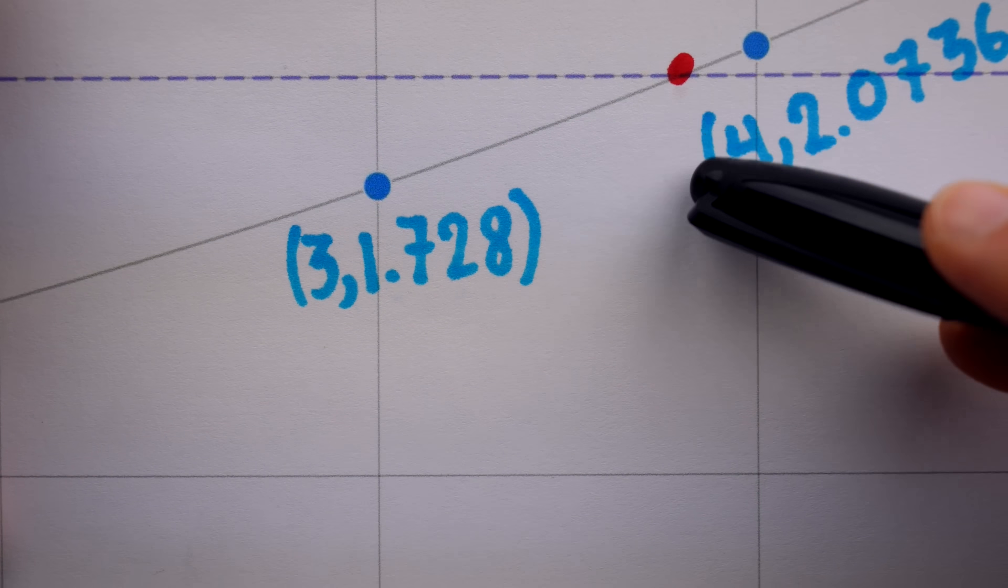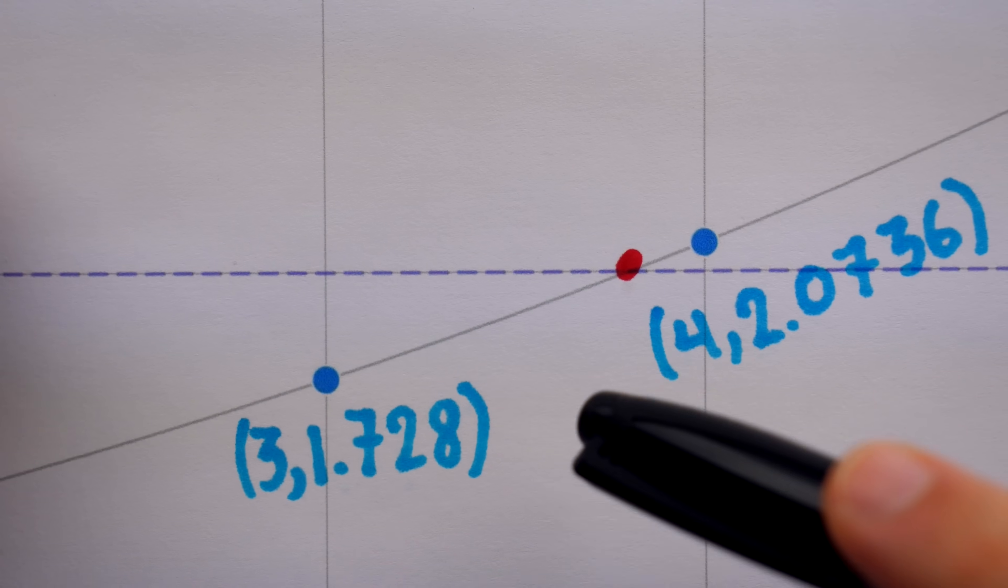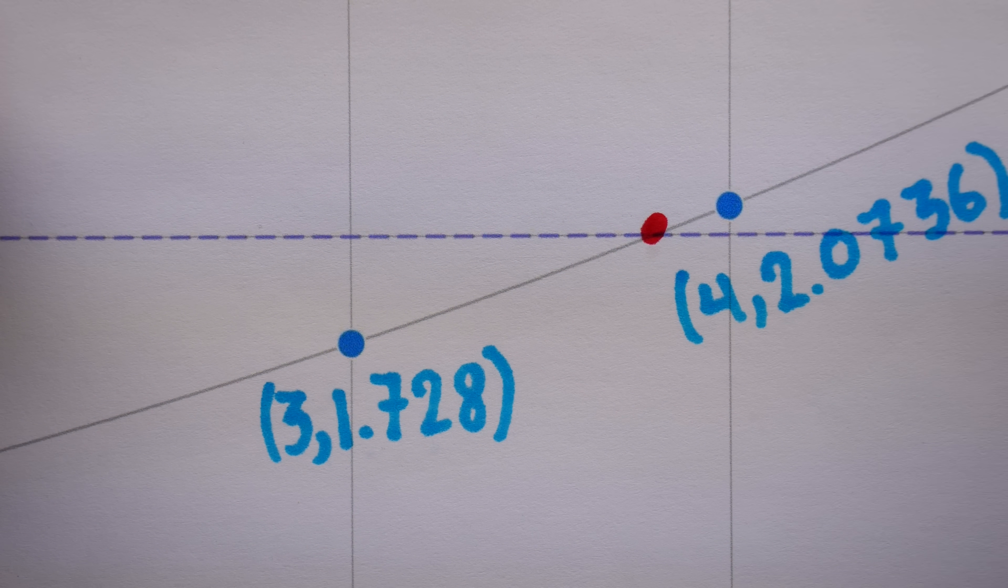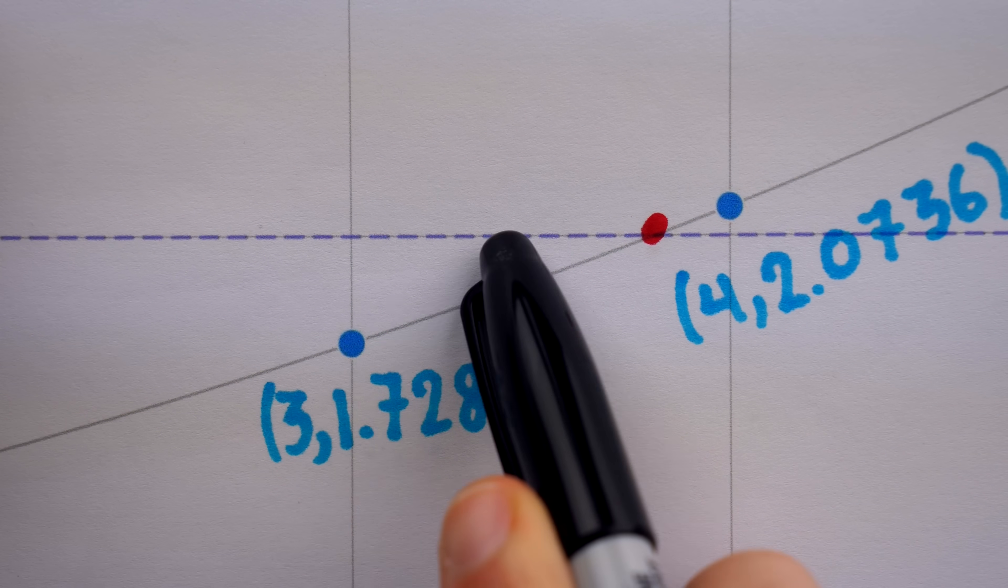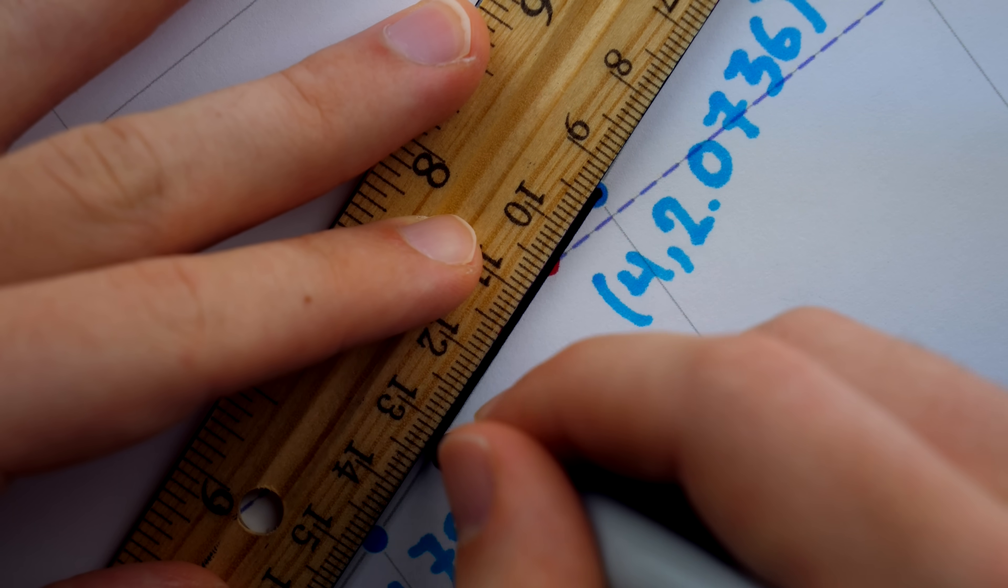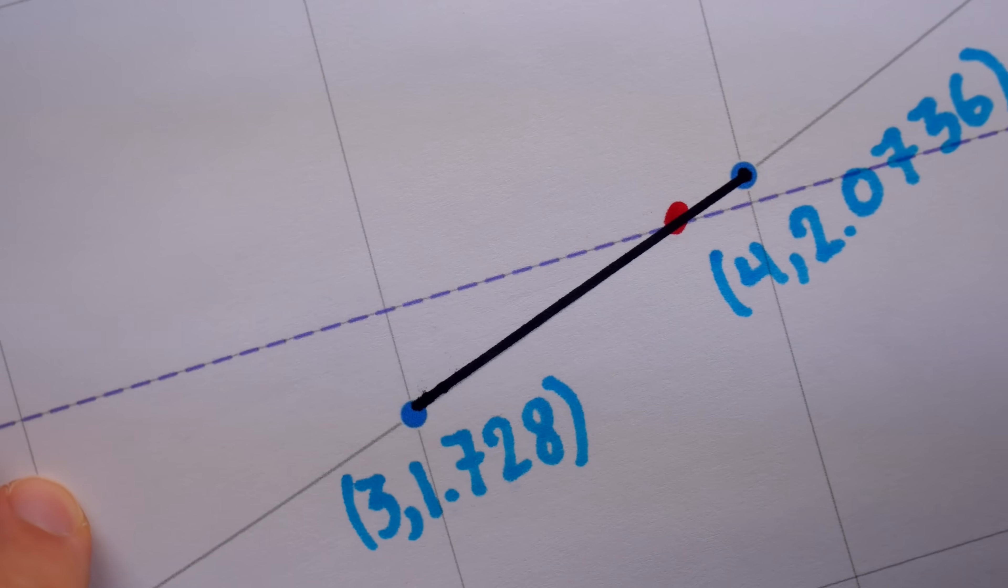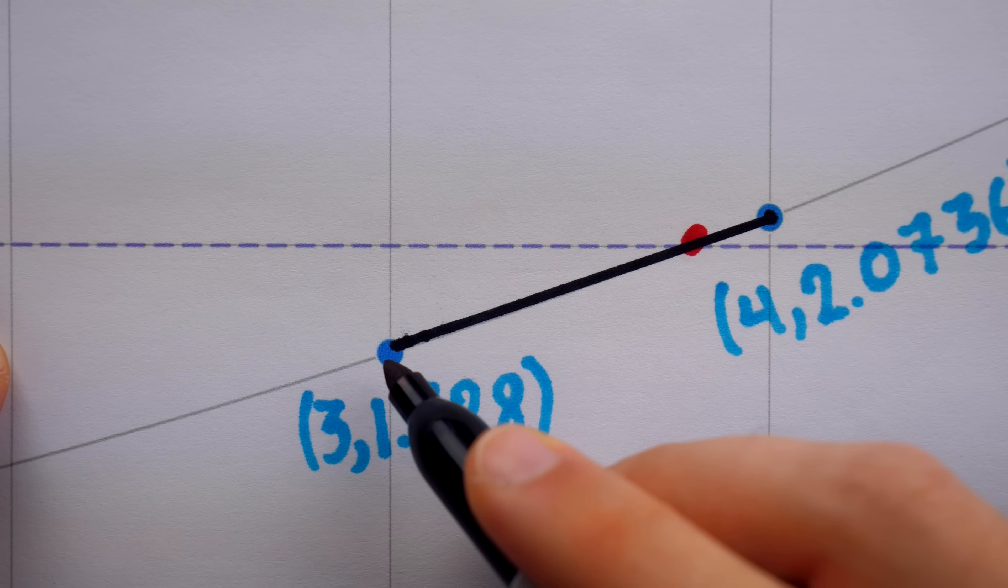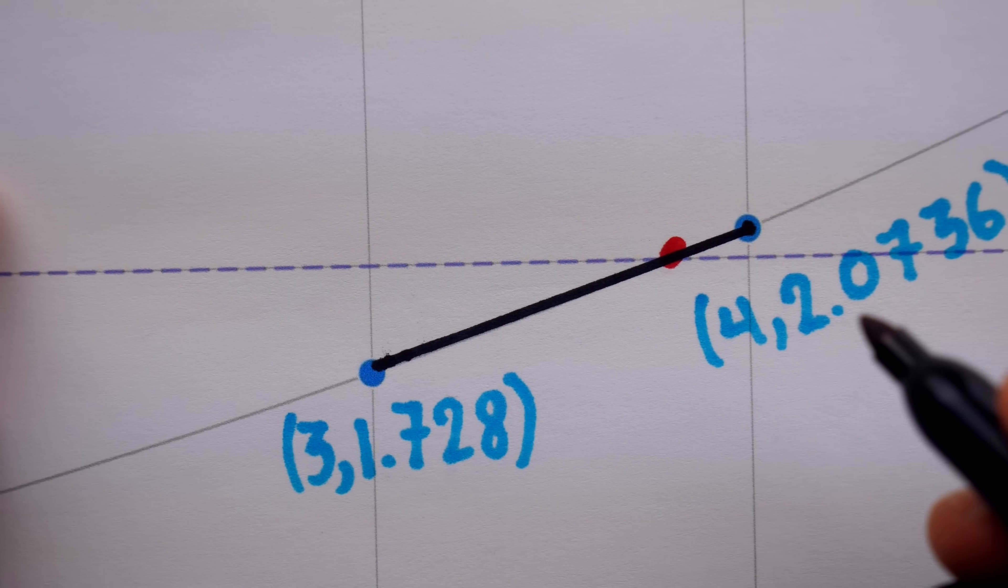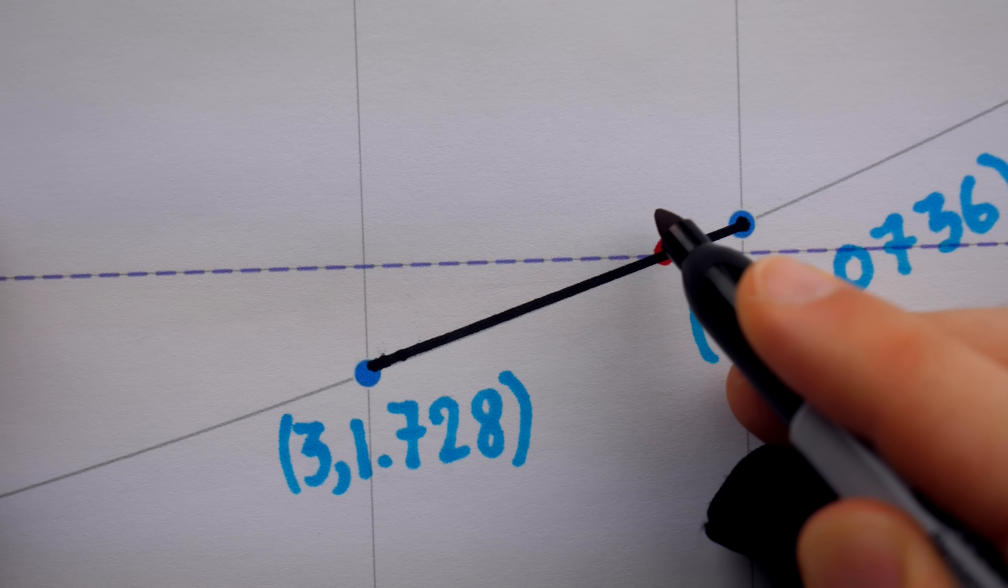So they're looking for the x-coordinate that produces this point of intersection between the curve 1.2 to the power of x and the horizontal line y equals 2. By using linear interpolation, they will instead find the point intersection between this black line connecting the two known points and the horizontal line y equals 2. And you can see it's a very good approximation.